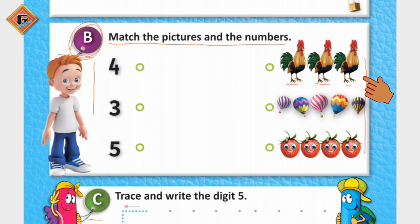First of all, here we have roosters. Then we have one, two, three, four, five. Here we have five hot air balloons. And at the last we are having four strawberries: one, two, three, and four. So we have to match four with the four strawberries like this.